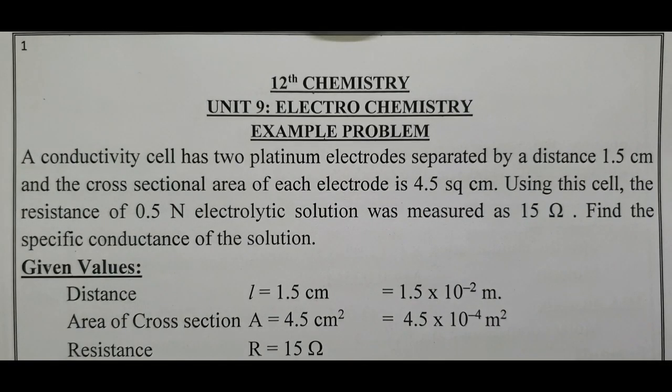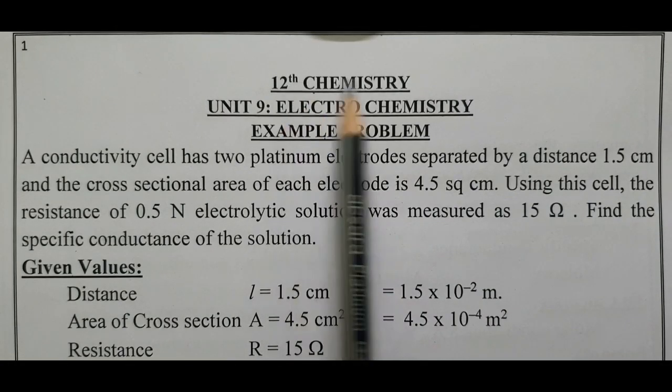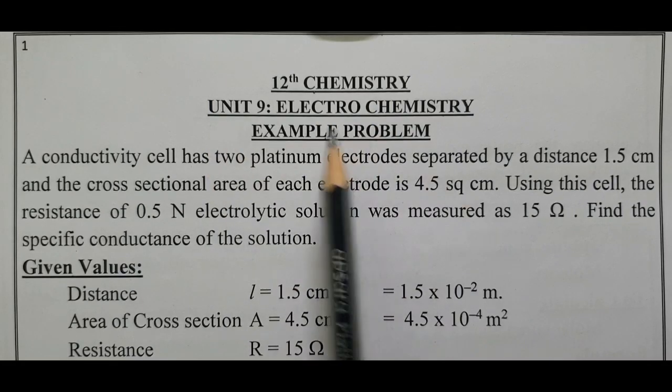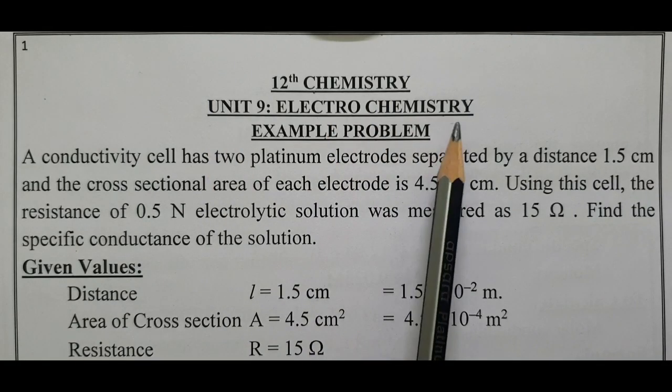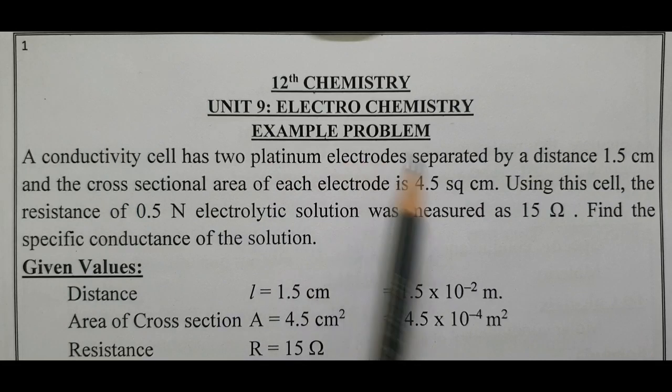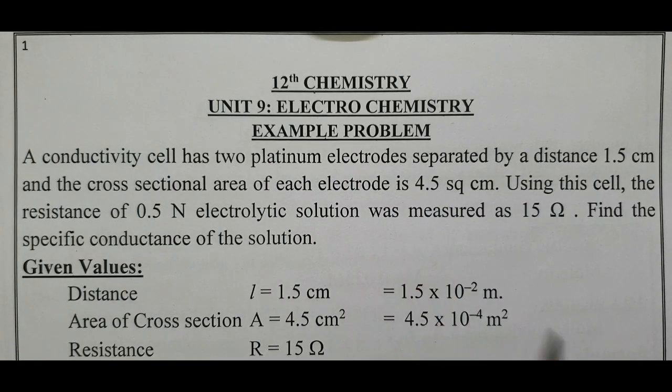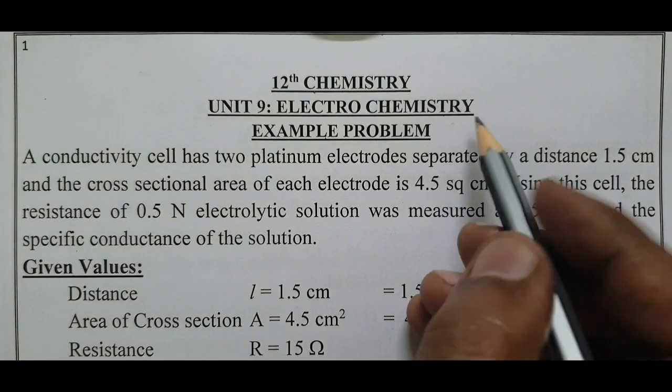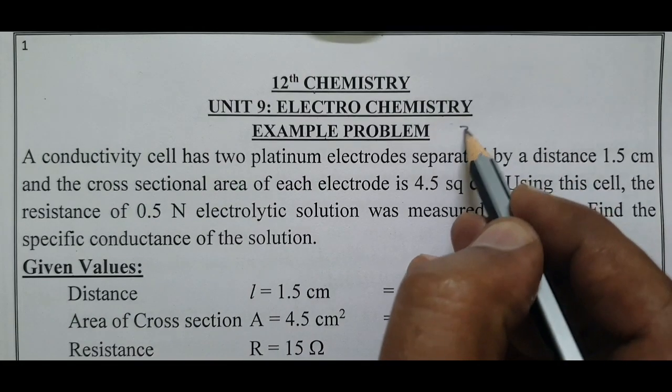Peace be upon you and your family. 12th Chemistry Unit 9, Electrochemistry, we are going to discuss an example problem. In our English Medium Book 2nd volume, the problem is present on page number 35.